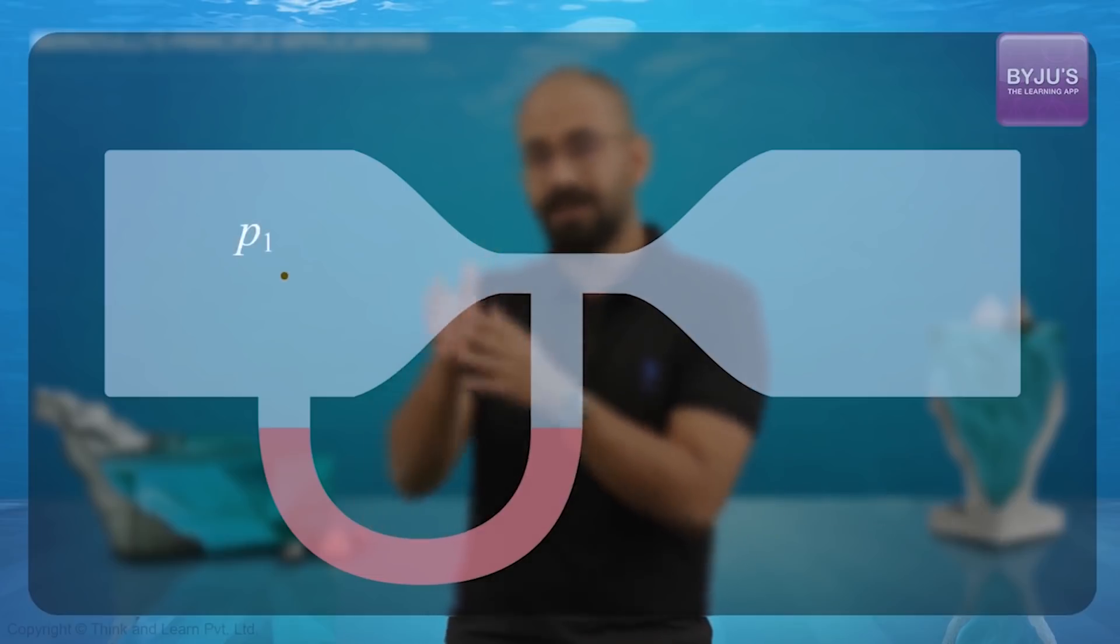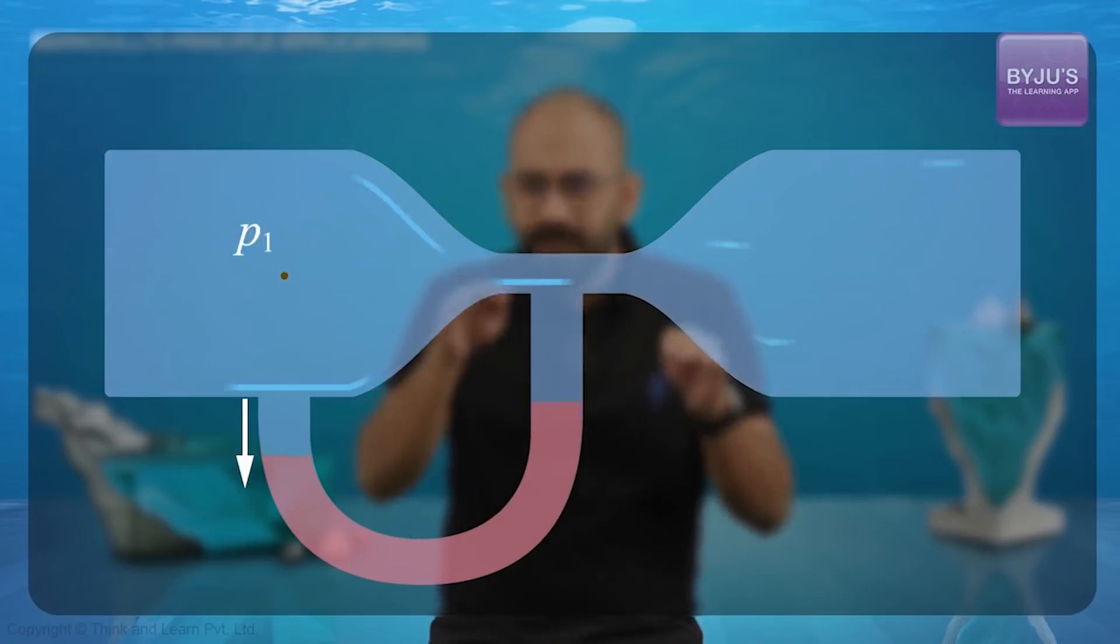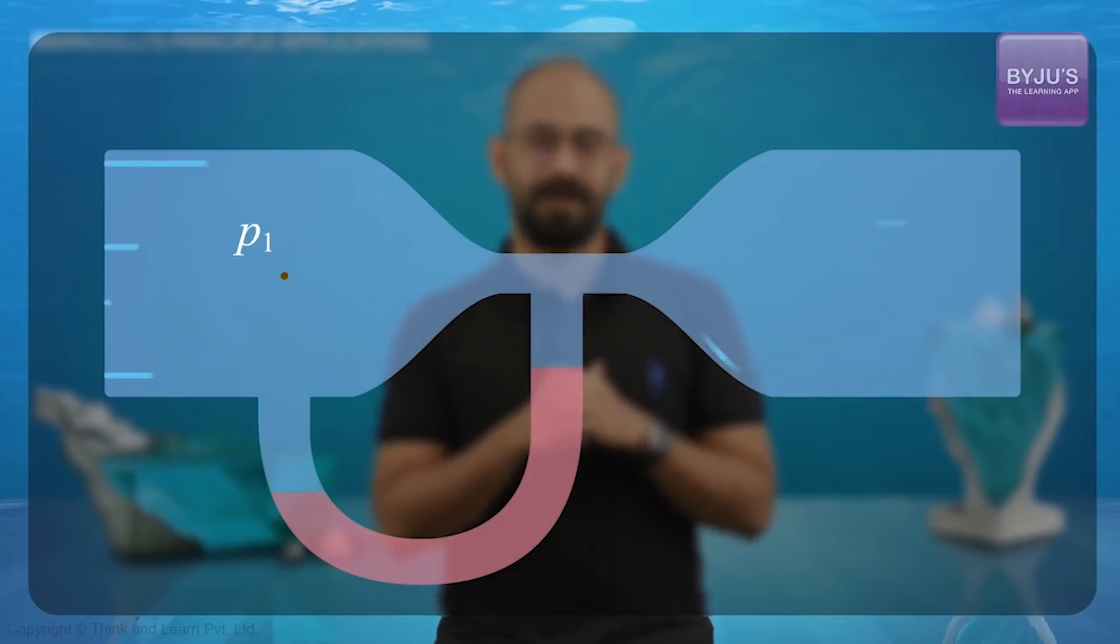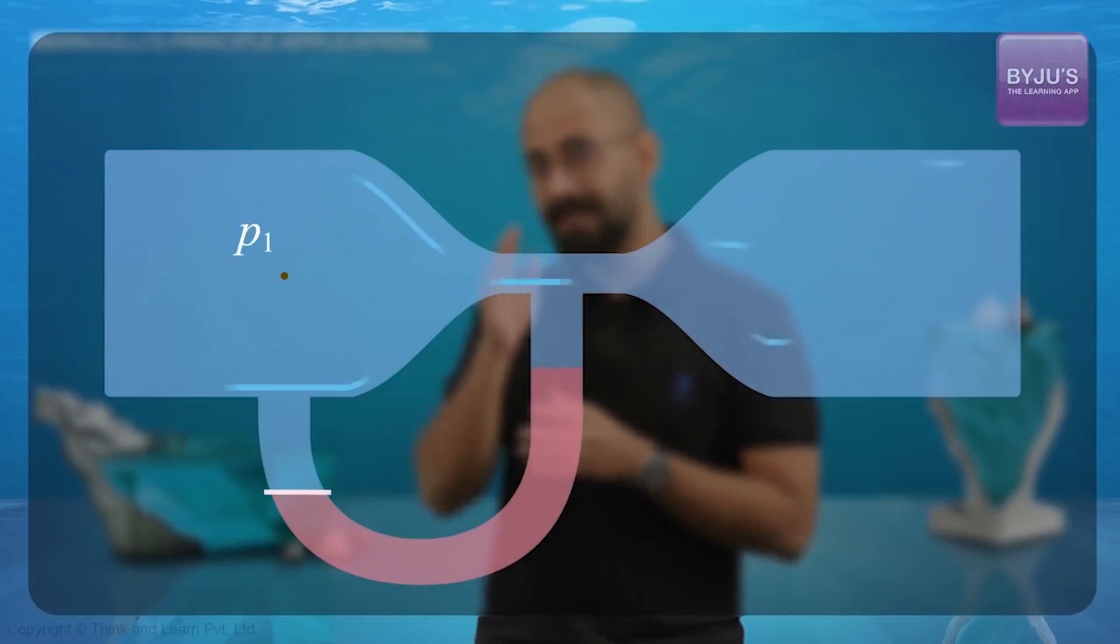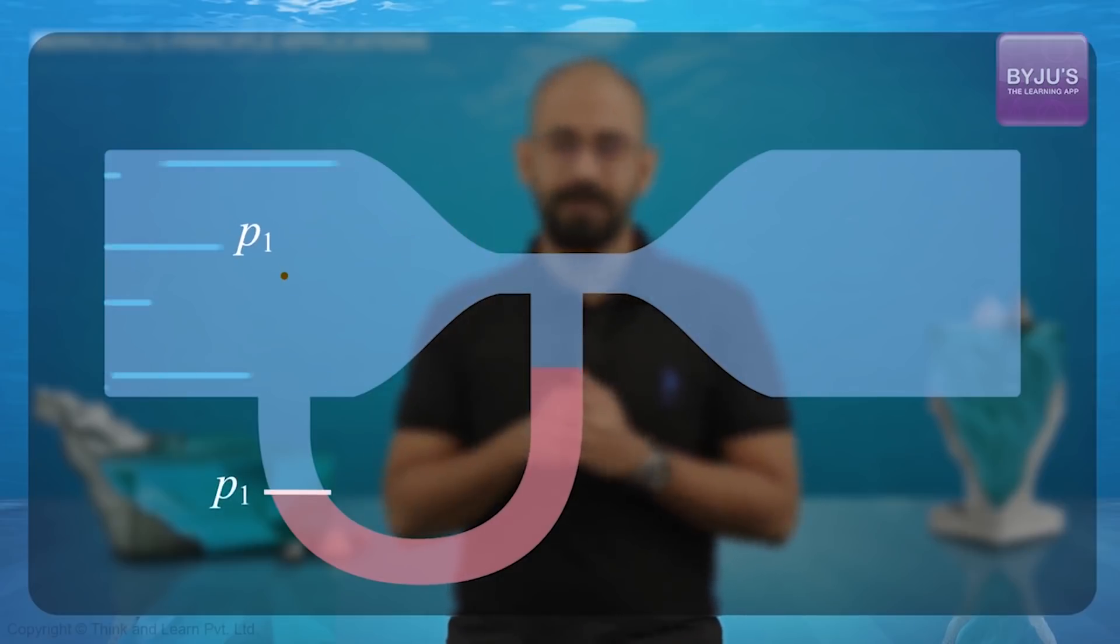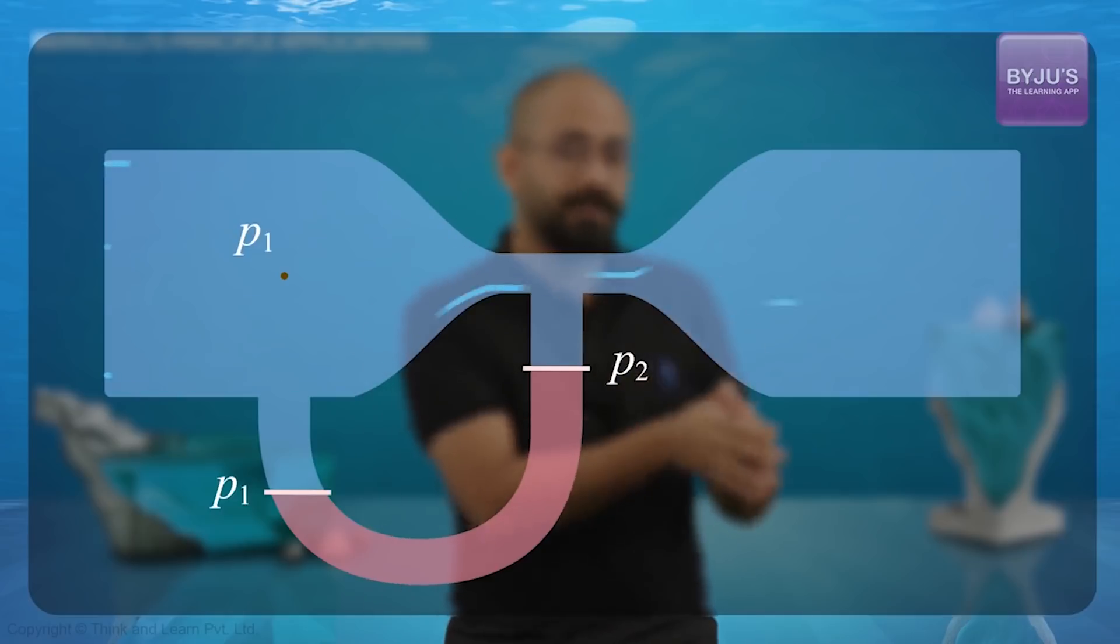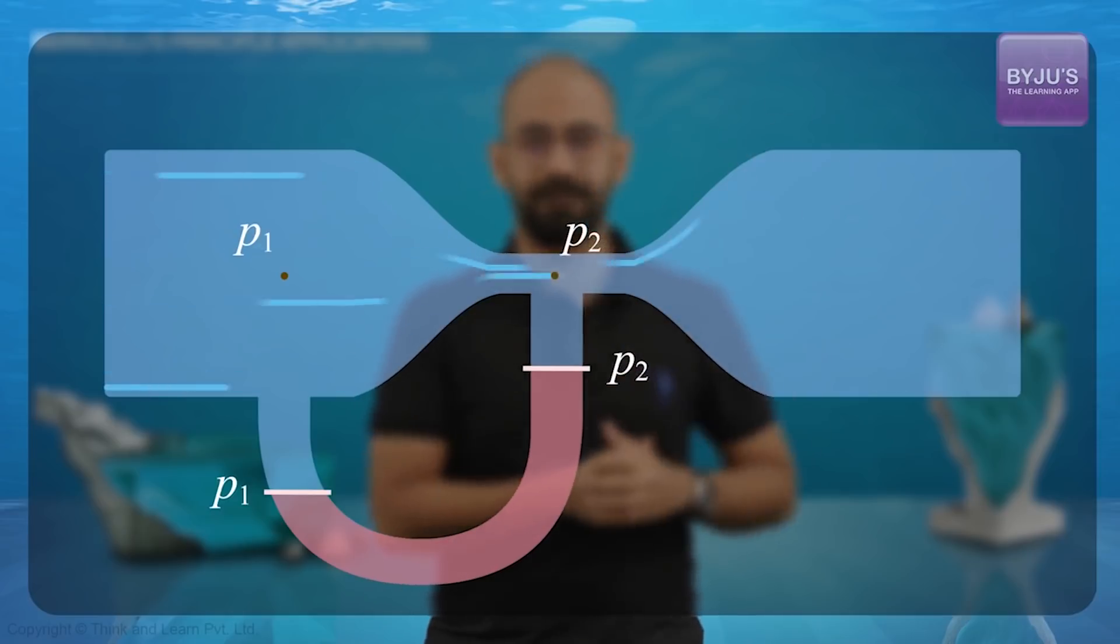Now, because the pressure here is greater, at point 1 is greater, that would push the liquid down, causing the levels to be uneven. And moreover, the pressure at this point will be P1 which is the pressure at this point. Similarly, the pressure at this point will be P2 and which is the pressure at this point.